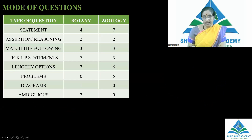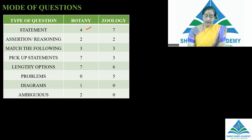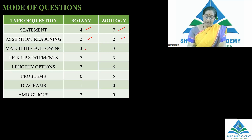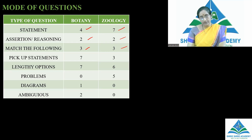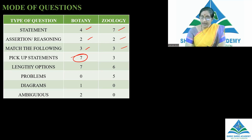The mode of questions that appeared in the 2022 paper related to biology: statement-type questions — 4 from botany and 7 from zoology. Assertion and reasoning questions: 2 questions in each subject. Match the following type: 3 questions in each subject. Pick-up statements — where lengthy statements are given and you have to pick which are correct or wrong statements — 7 in botany and 3 in zoology.